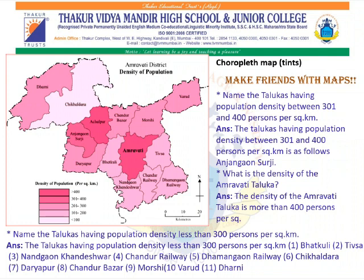The shades become darker with increasing values and lighter as the values decrease. Now we will study the Amravati district density of population map. In the index, we can see density of population — that is, per square kilometer. The highest value is 400 people per square kilometer, whereas the lowest is less than 100 per square kilometer. So here we will do the map reading.